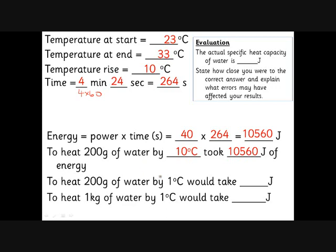Suppose we only wanted to heat it by 1 degree C instead of 10 — that would only take one tenth of the energy, so 1,056 joules. But we wanted to know the energy to heat a whole kilogram, which is five times as much water, so it would take five times as much energy. That gives an answer of 5,280 joules. The actual number, which is always given in the exam if needed, is 4,200 joules — that's what it takes to heat up 1 kilogram of water by 1 degree C.